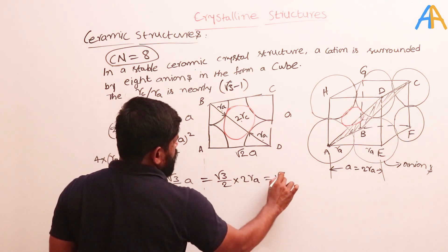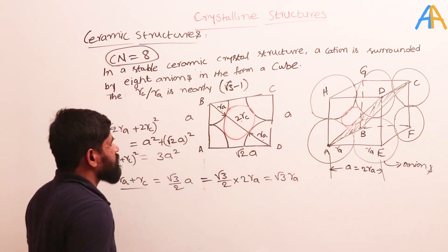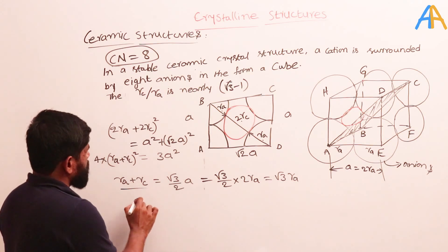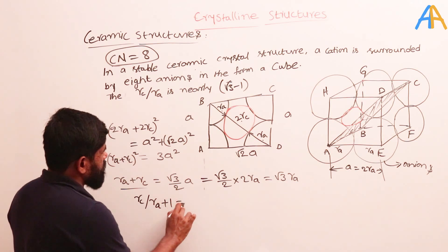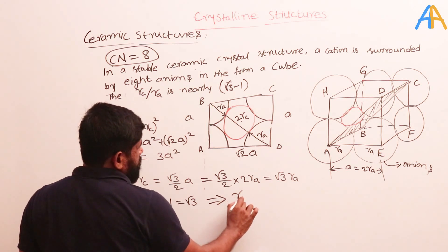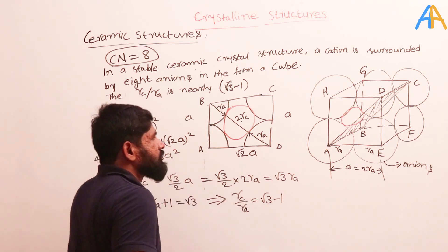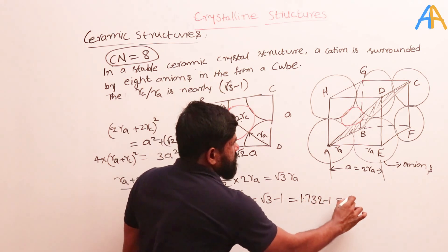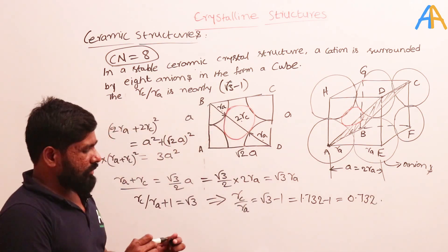From rA + rC = root(3)*rA, dividing both sides by rA: 1 + rC/rA = root(3), so rC/rA = root(3) − 1. The value of root(3) is 1.732, so rC/rA = 1.732 − 1 = 0.732. This confirms the geometrical derivation gives us the same value.